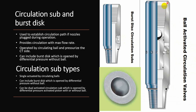The circulation sub also uses a dropped ball and surface pressure to shear the shear pins, opening ports to allow circulation at maximum flow rate. This is important if your nozzles become blocked during operation, or if you have a mud motor and want to save the elastomer of the stator. A second type of circulation sub is the burst disk, which does not require dropping a ball — you only need to apply differential pressure to burst the thin-walled disk and establish circulation.